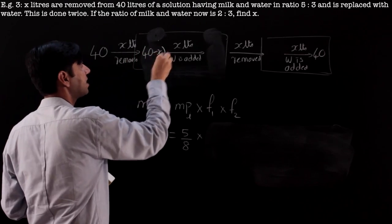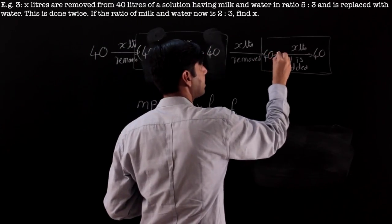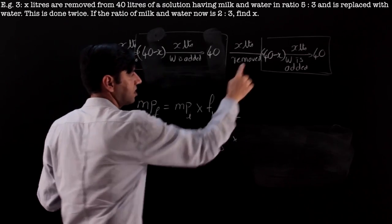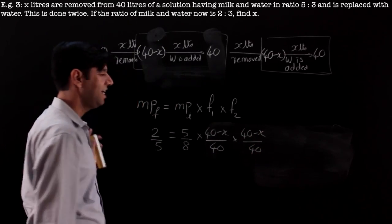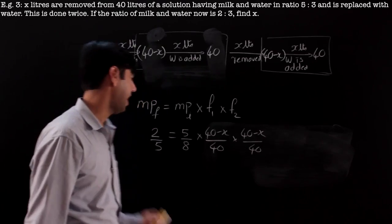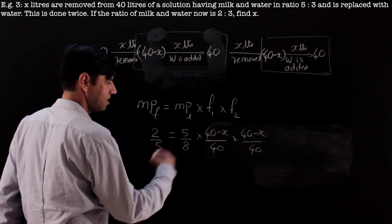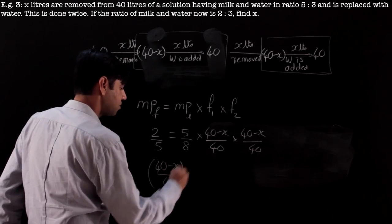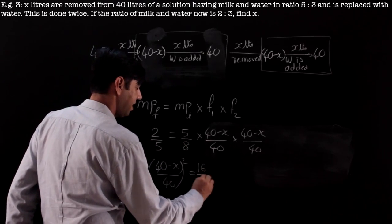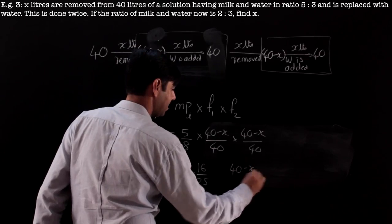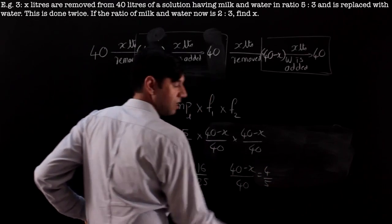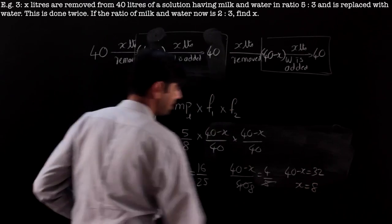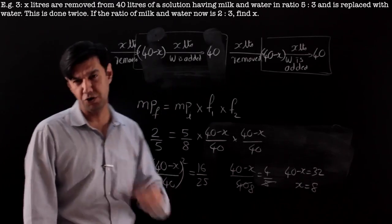Writing it out explicitly: 40 minus x over 40, and the same again next time — (40−x)/40 squared equals 16/25. Taking the square root, (40−x)/40 = 4/5. Solving: 40 minus x = 32, giving x = 8. But as I said, this is a waste of time and calculation. You should be very strong in ratios — the direct factor method is faster.